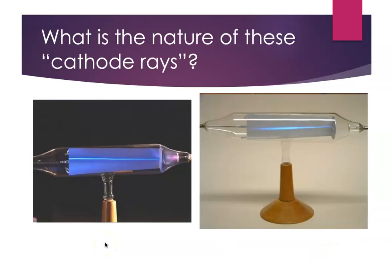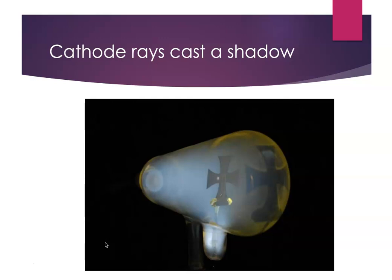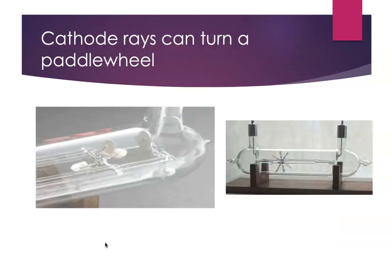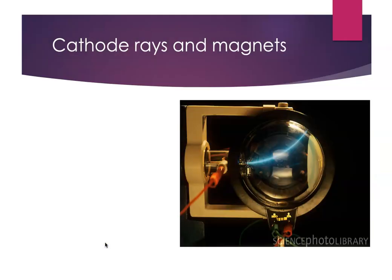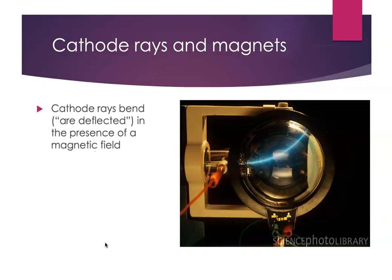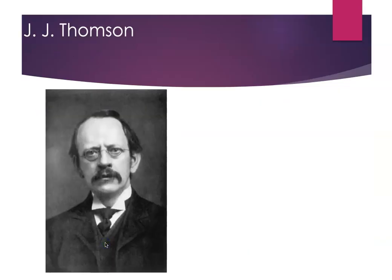The nature of the cathode rays became a really hot topic in physics. They had some interesting properties: they cast a shadow, they can turn a paddle wheel — you can actually make the paddle wheel spin. Even more interesting, if you had a magnetic field, the cathode ray would bend — deflect — in the presence of a magnetic field. These were really interesting behaviors.